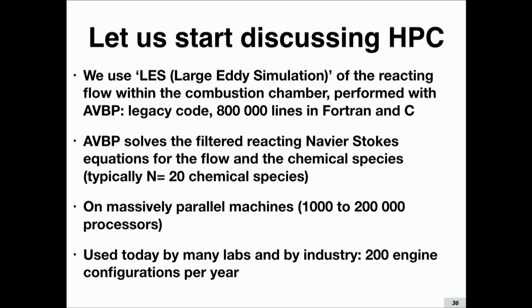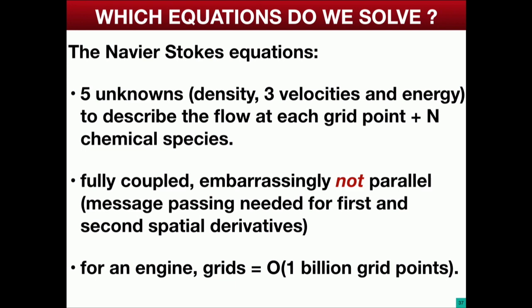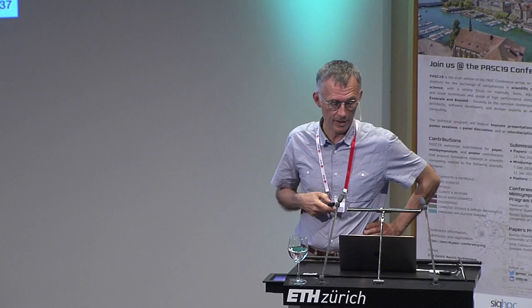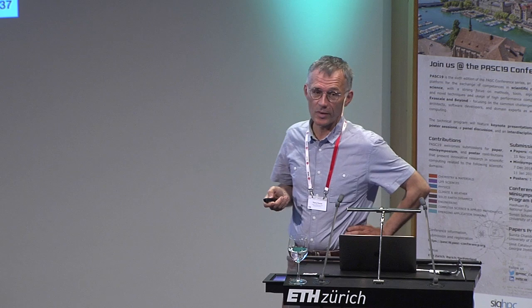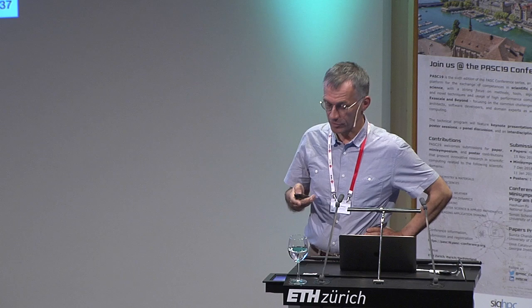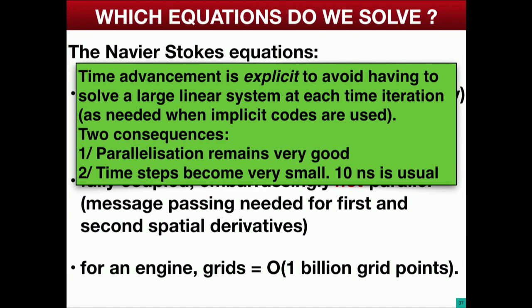The equations are well known — this is the Navier-Stokes equations plus N chemical species equations with their source terms. These things are fully coupled and are not embarrassingly parallel — you need a lot of message passing to compute all the gradients. The grids we use are typically of the order of 1 billion points today. We use explicit time advancement, which means you don't have to invert any matrix, you just advance in time. But the typical time step is about 10 nanoseconds, so it takes millions of iterations to reach a solution.